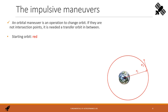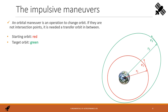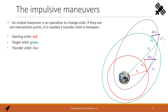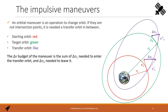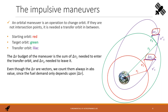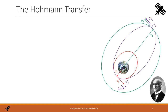Sometimes the starting and the target orbit have intersection points, so that we can change directly. Sometimes not. In such a case, we need a transfer orbit in between. The starting orbit is the red one, the target is the green one, and the transfer is the lilac one. The total delta V budget of a maneuver is the sum of delta V1 for entering the transfer orbit, and delta V2 for leaving it. Even though the delta Vs are vectors, we count them always in absolute value, since the fuel consumption depends only on the absolute value.